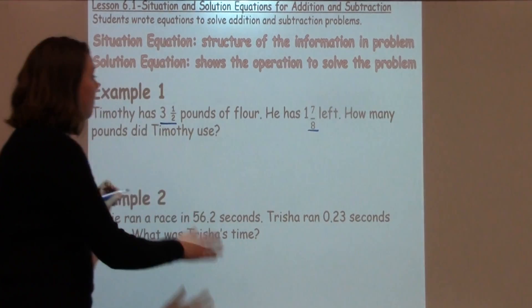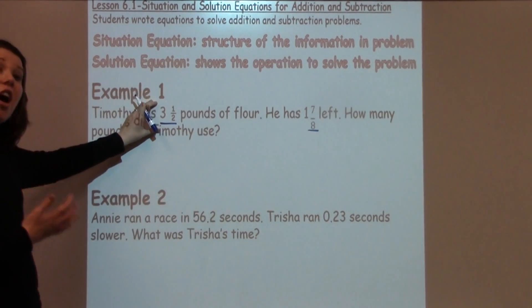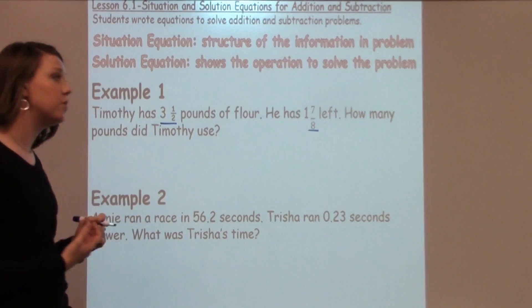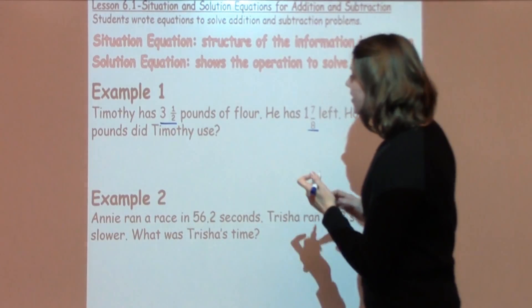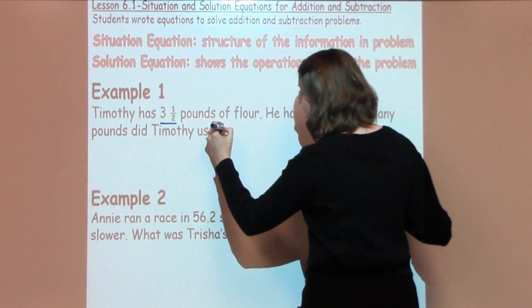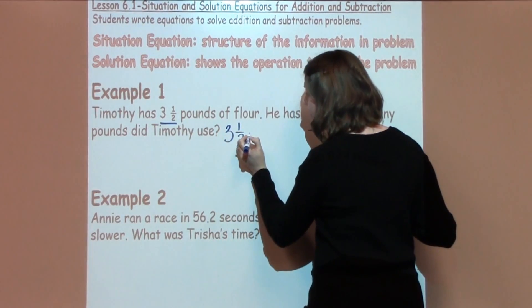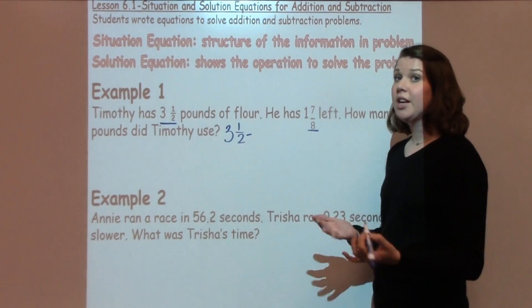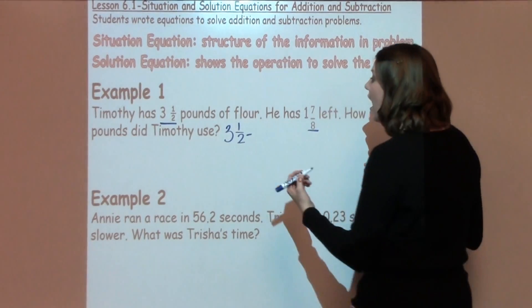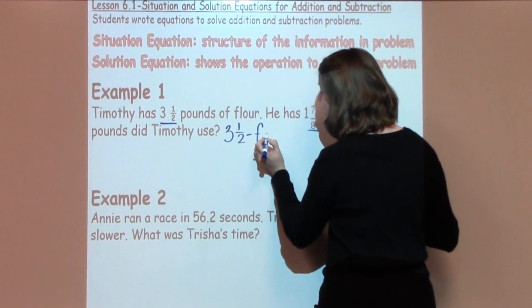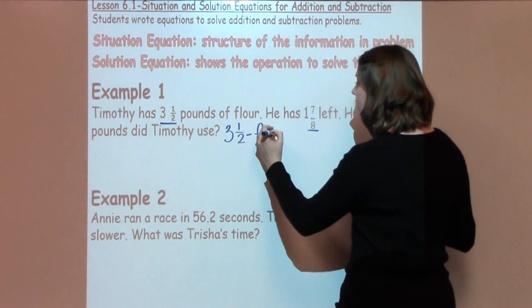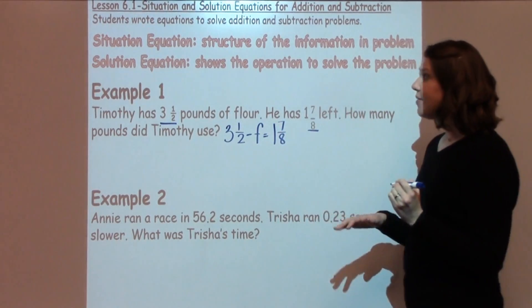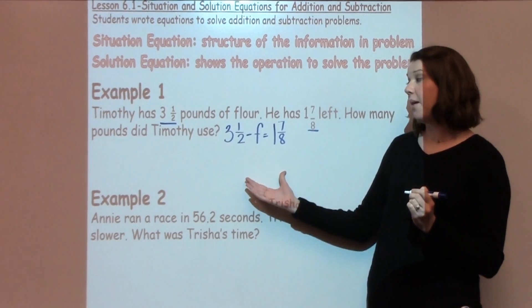In this problem, I know this is how much he started off with, and this is how much he is left with. What I don't know is how much he actually used. So to set up a problem like this, I'm going to write down that I've got 3 1/2 minus a variable. I can put any variable here. Some students put a symbol. I'm going to call this F for flour, and that's going to equal my 1 7/8. Now I have set up my equation to solve this problem.